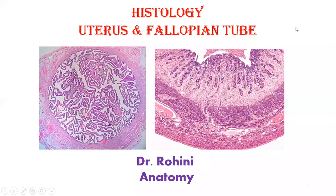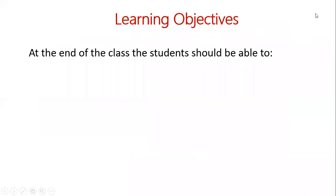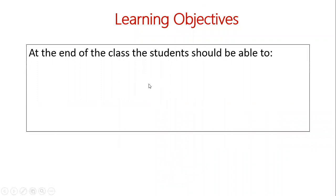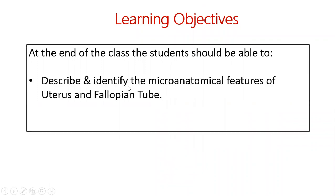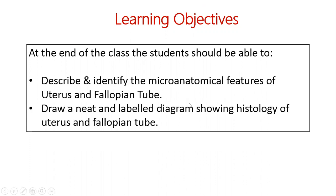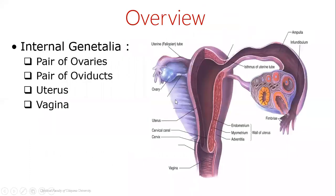Hello everyone. Now we are going to discuss about histology or microanatomy of uterus and fallopian tube. At the end of class, you all should be able to describe the microanatomy of uterus and fallopian tube and you should be able to draw a neat and labelled diagram.